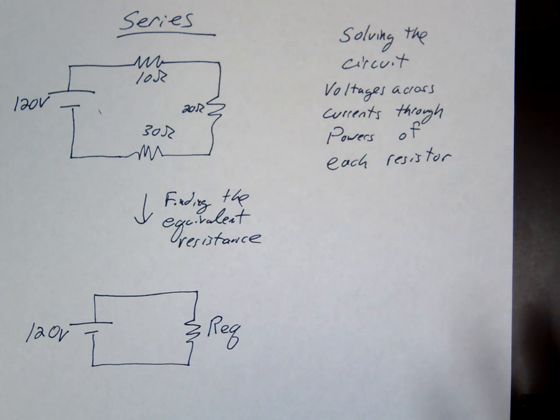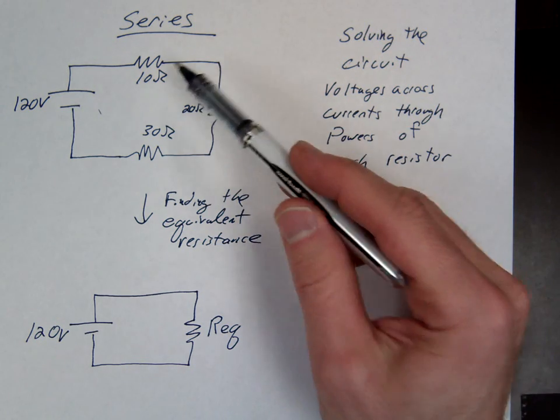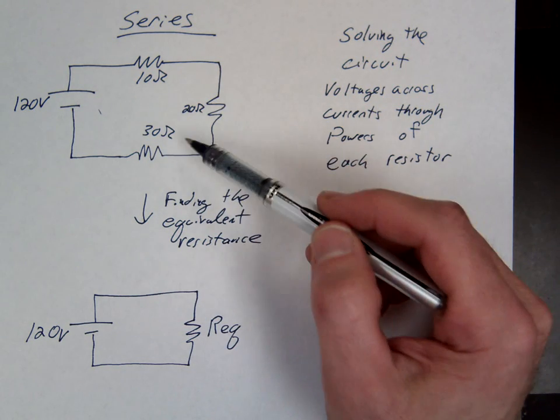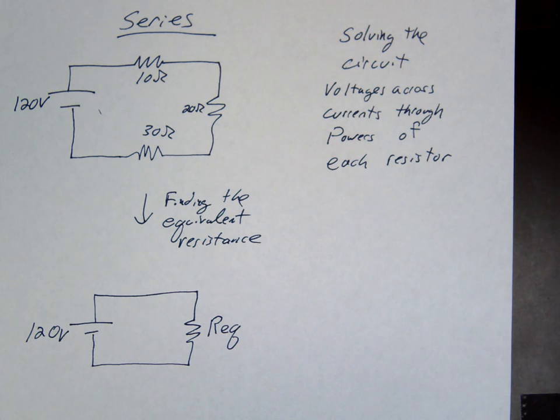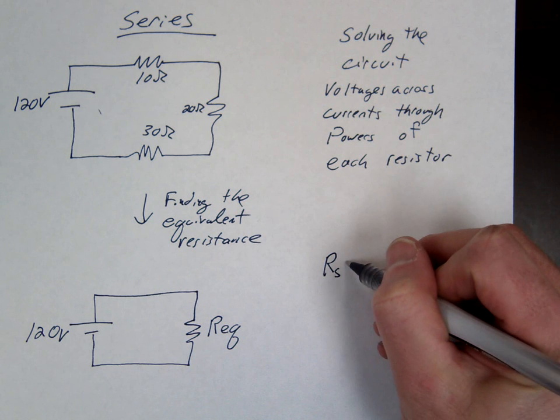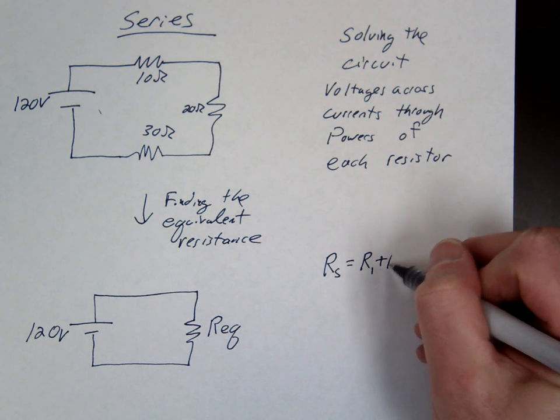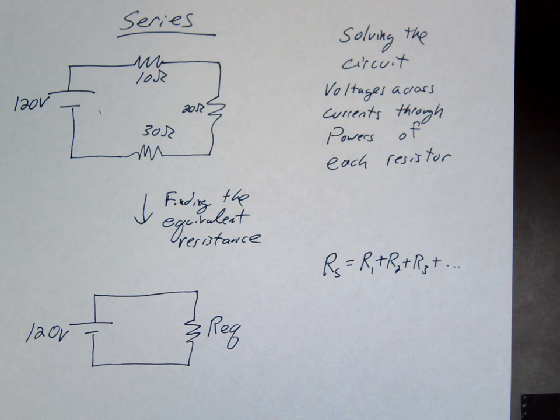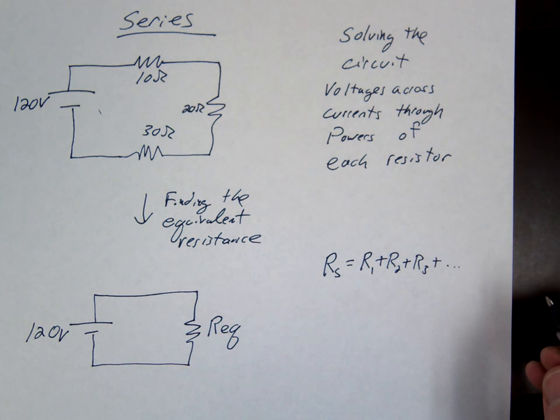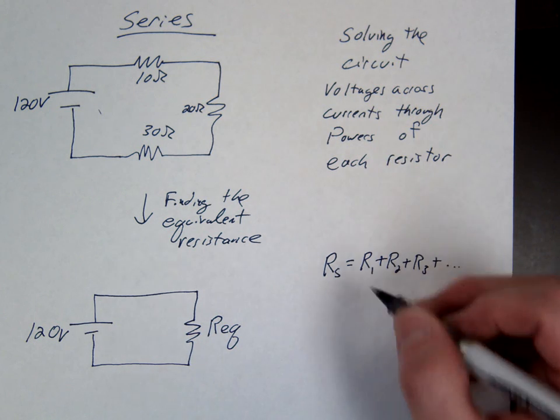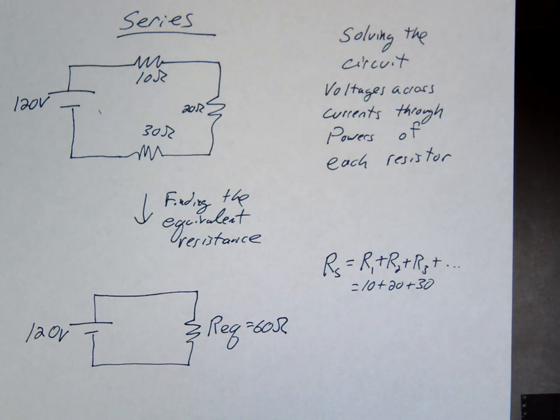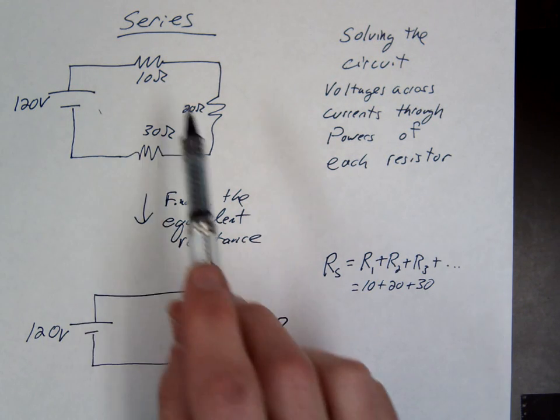So for a series circuit, this is really straightforward and actually you could probably conceptualize what it would be. As we start adding resistors, what do you think is going to happen to the resistance? It's going to increase. So as you keep adding more resistors, it's going to just keep getting greater and greater. And so in fact, to find the equivalent for a series circuit, you just add them up. So this would be the generic equation: R1 plus R2 plus R3 and so on. For this circuit, it's simply 10 plus 20 plus 30. So for this circuit, the equivalent resistance would be 60 ohms.